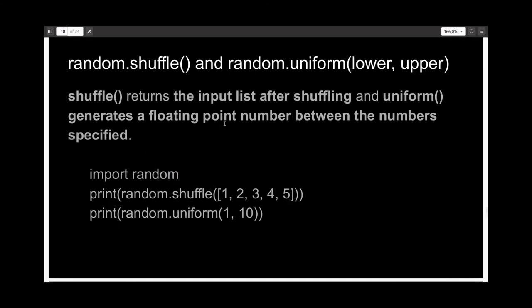Let's move on and talk about the shuffle function and the uniform function. The shuffle function will return the input list after shuffling, and the uniform function will generate a random floating point number between the numbers you have specified as arguments.